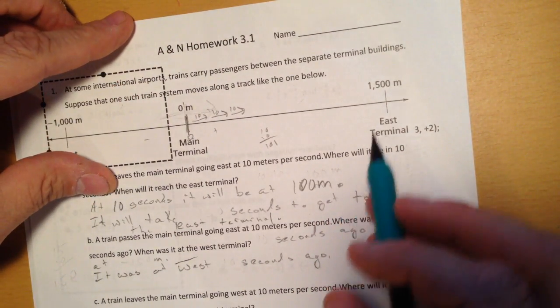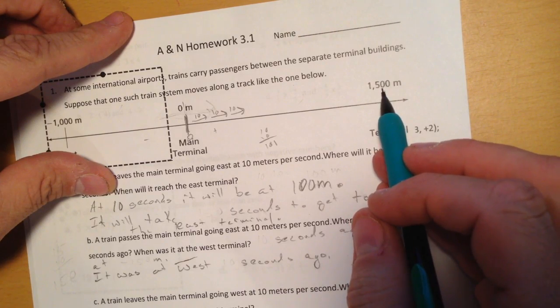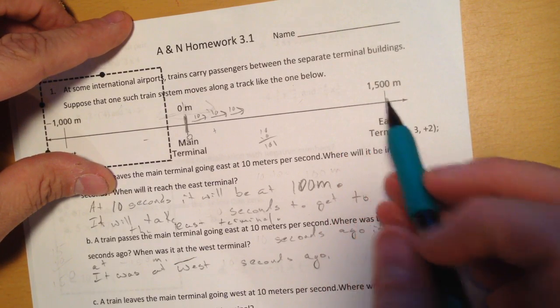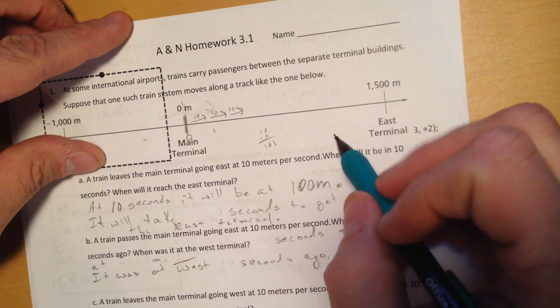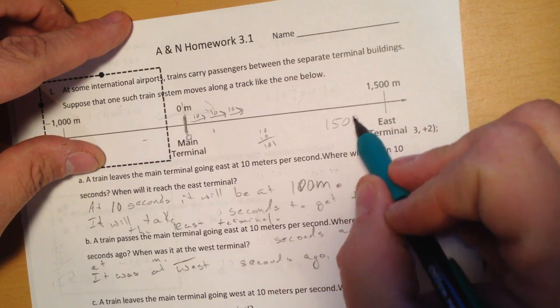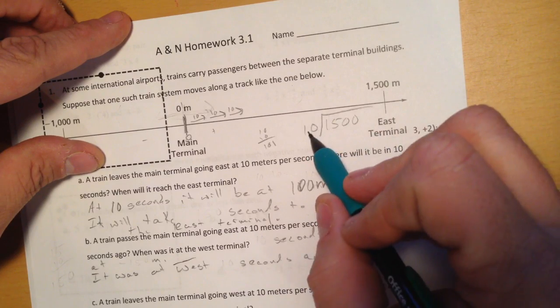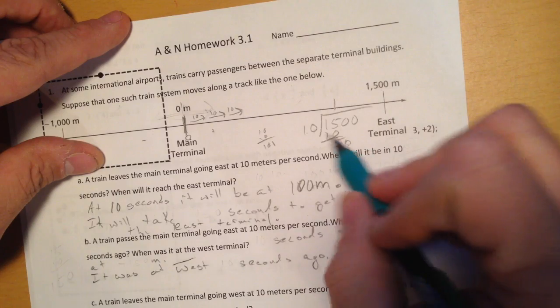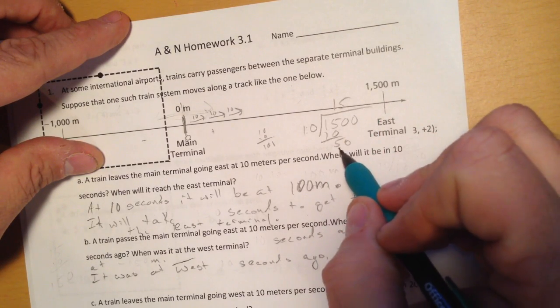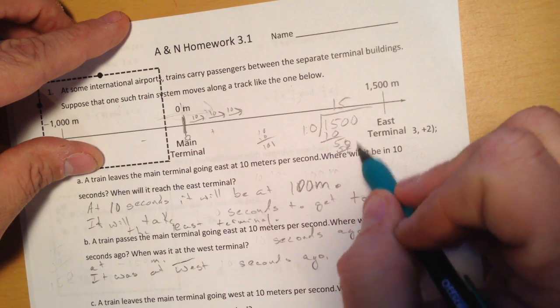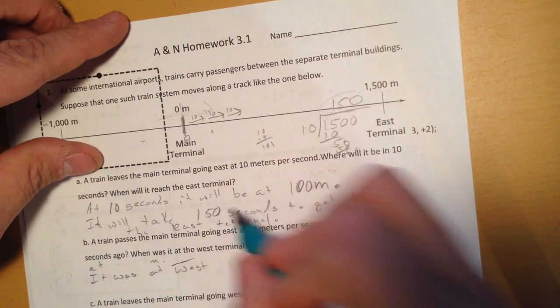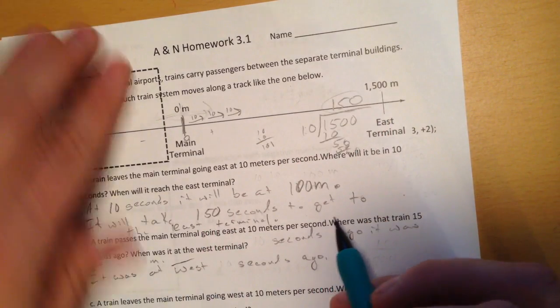And when will it reach the terminal? Well, if every 10 meters comes in—I'm sorry, 10 meters per second, every second is 10 meters—then it's 1,500 divided by 10. 10 goes into 15 one time, 10, drop to 5, drop to 0, 10 goes into 5 five times, 50, drop to 0, and I have one more zero to carry. So it will take 150 seconds to get to the east terminal.